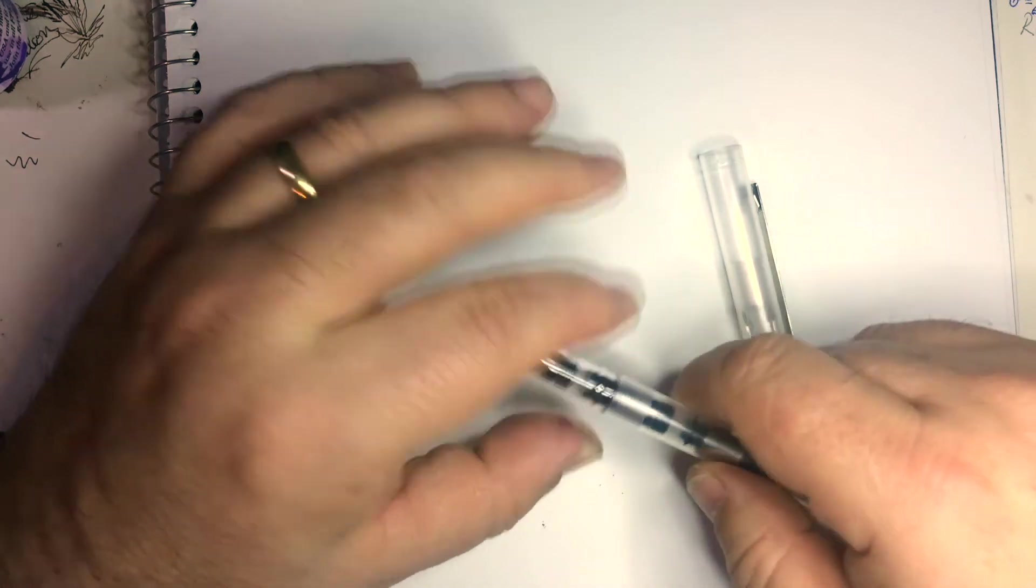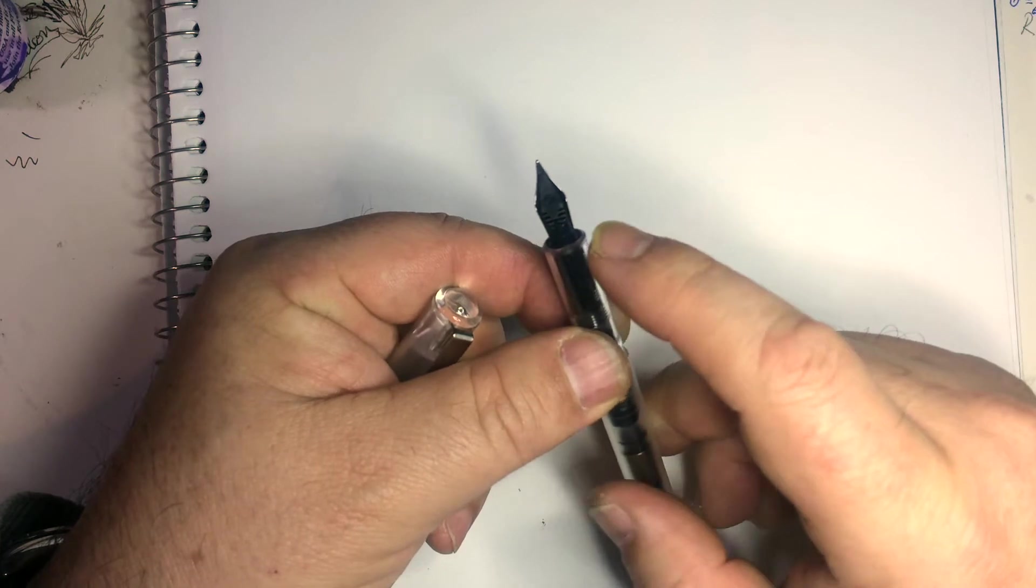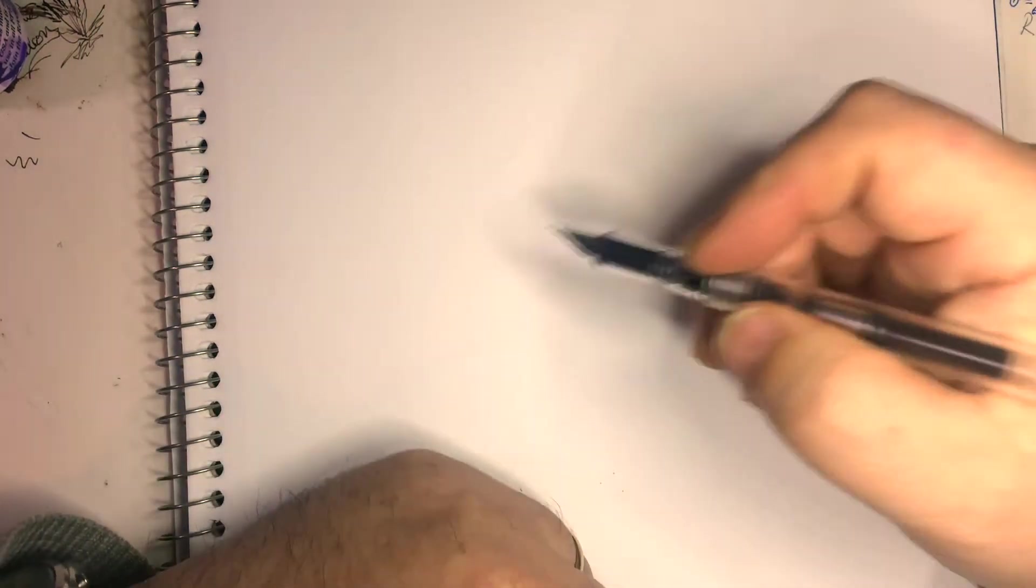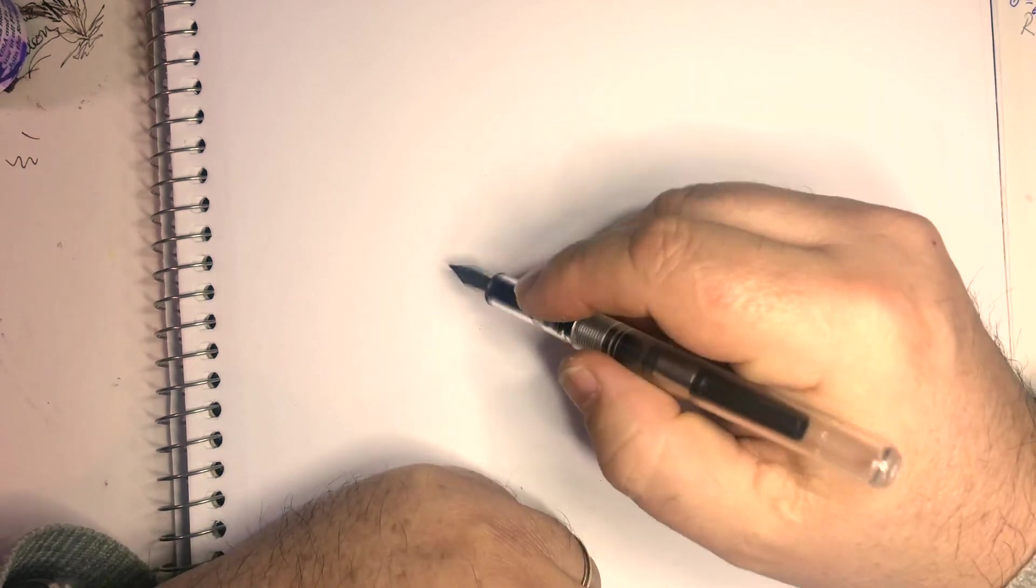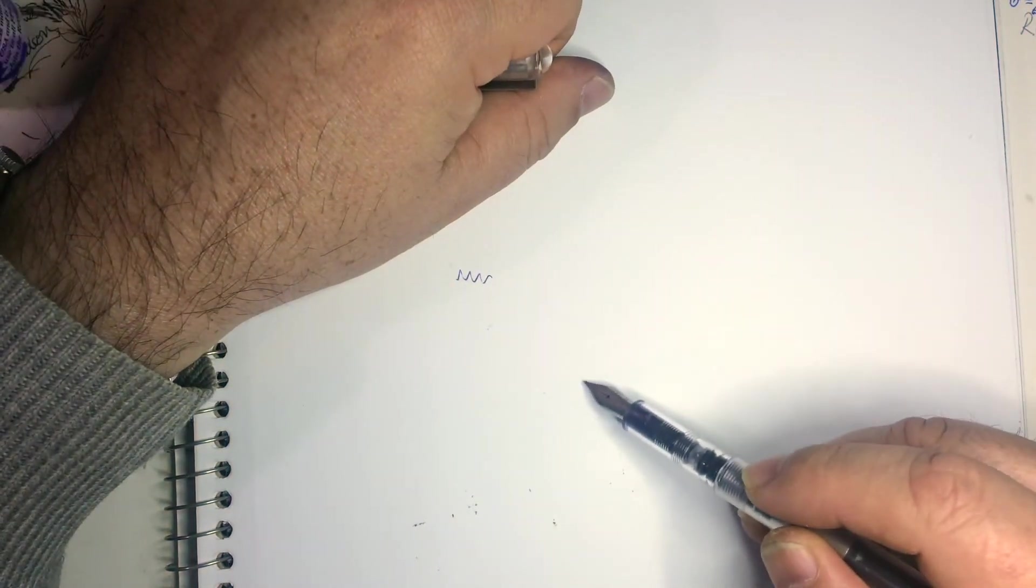And again, if you wanted to eyedropper this, you could. Let's give this an inspection. No ink drew up between the nib unit and the section. You can see the ink is sitting underneath the number five nib between the nib and the feed, and the pen writes great. So let's draw something, and we'll speed this up now.